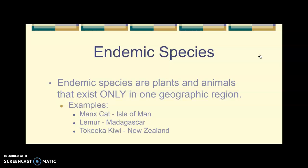For example, a Manx cat is only found on the Isle of Man. A lemur — if you watched the movie Madagascar, the lemurs did all the dancing in that movie — but there are actual real lemurs, not just cartoon characters, and they are endemic, only found in Madagascar. That's what endemic means.